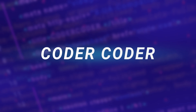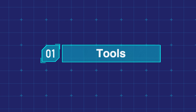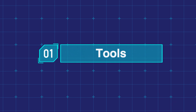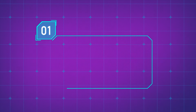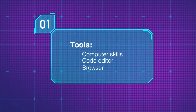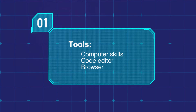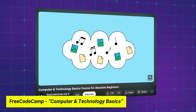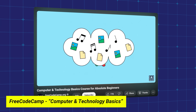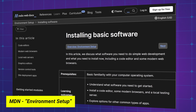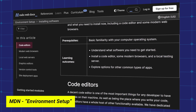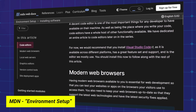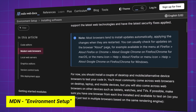Let's get into it! Before learning the actual coding, you'll need to get familiar with the tools you'll need in web development. The main tools you'll need will be a computer, a code editor, and an internet browser. If you're not familiar with computer skills or just need a refresher, check out FreeCodeCamp's video on their YouTube channel, or go through the Getting Started modules on MDN — Mozilla Developer Network — for a text-based explanation.